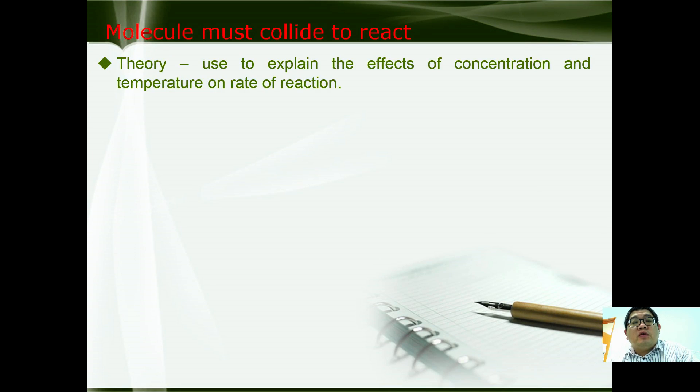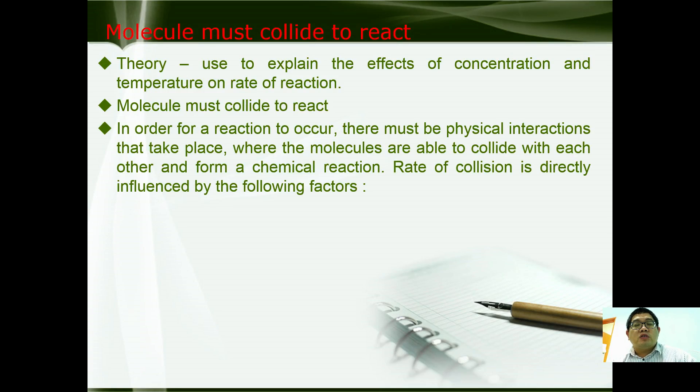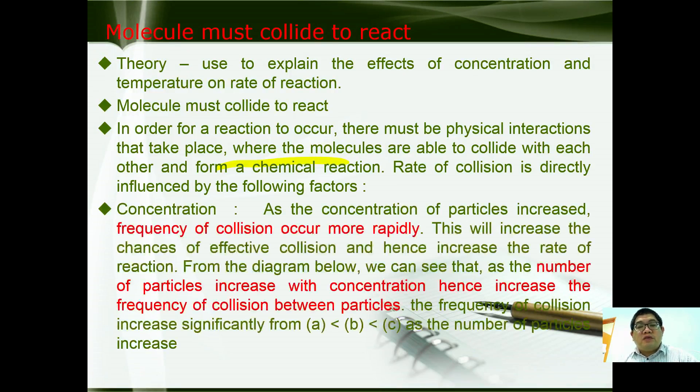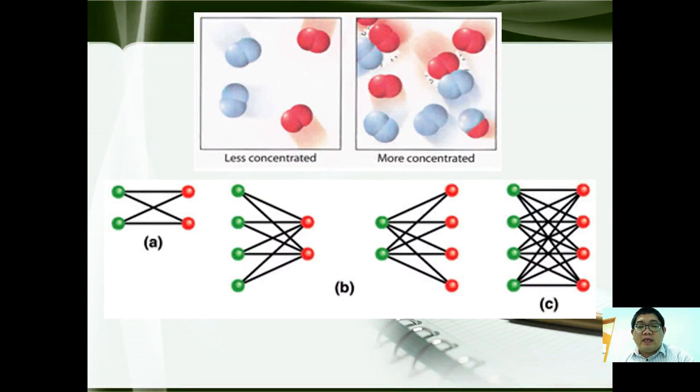So what are all these three main ideas or postulates for the reaction rate? The first one is that molecules must collide to react. In order for reactions to occur, there must be a physical interaction that takes place where molecules must collide with each other to form a chemical reaction. Rate of reaction is directly influenced by concentration. As concentration increases, frequency of collision occurs more rapidly. This will increase the chances for effective collisions and increase the rate of reaction. From the diagram, we can see that if you have only 2 green particles collide with 2 red particles, there are only little collisions taking place. However, as the number of particles increases, the collision rate for each of the particles increases gradually.